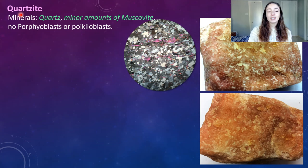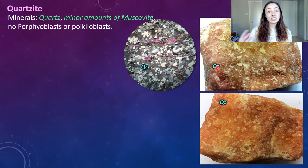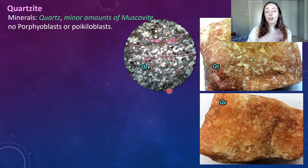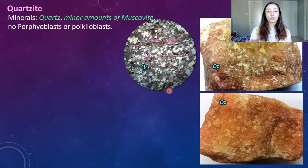Now moving on to quartzite — basically quartzite is the metamorphic equivalent of quartz-rich sandstone. Over here to the right we can see some hand sample examples with basically just pure quartz. They are orange because they have impurities, but it's mainly quartz. The thin section is dominated by quartz, which appears as the polka-dotted black and white crystals throughout. If we were to rotate the thin section, you'd see those grains shine white and then go black — that's called going into extinction.